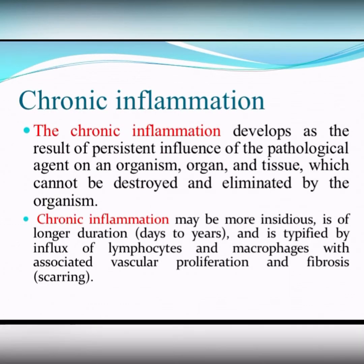About chronic inflammation. It develops as a result of persistent influence of the pathological agent on an organism, organ, and tissue which cannot be destroyed and eliminated by the organism. Chronic inflammation may be more insidious, is of longer duration — days, it may be even years — and is typified by influx of lymphocytes and macrophages with associated vascular proliferation and fibrosis, like scarring.